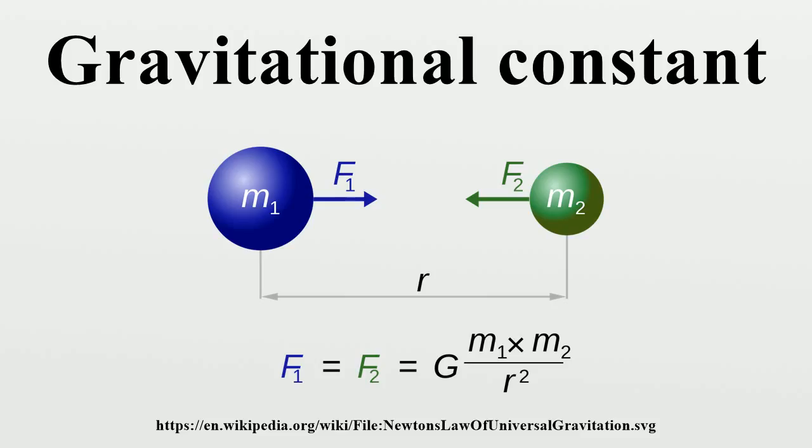In the January 2007 issue of Science, Fixler et al. described a new measurement of the gravitational constant by atom interferometry, reporting a value of G equals 6.693 × 10⁻¹¹ m³ kg⁻¹ s⁻².